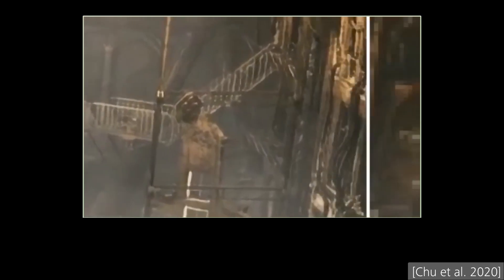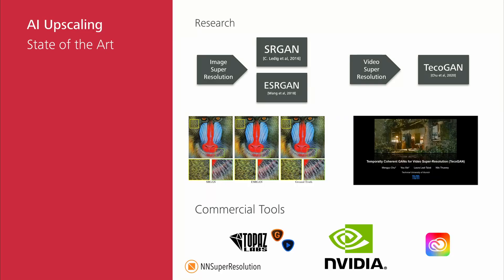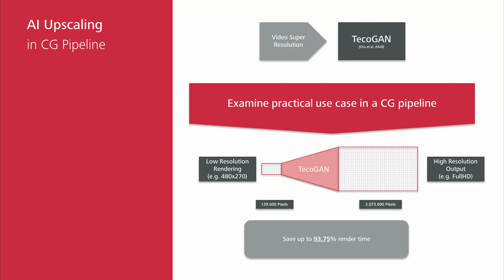If those same results could be consistently reproduced on full CGI renderings for VFX or animation work, productivity could be increased immensely by saving a significant amount of render time. To produce a full HD output image containing roughly 2 million pixels, we could render a low-resolution 270p image containing around 130k pixels and upscale with TecoGAN to generate the same resolution output. This could mean saving over 90% of the render time compared to rendering at full resolution.